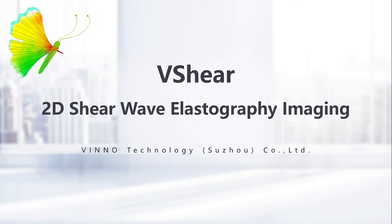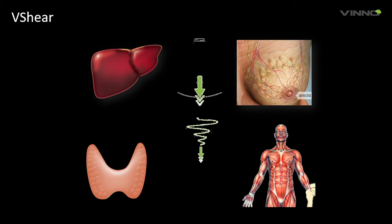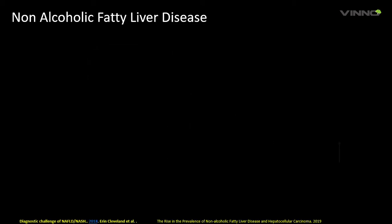VShear is a 2D shear wave elastography imaging that non-invasively assesses the stiffness or elasticity of tissue to detect, diagnose, and grade for clinical management. 2D shear wave elastography is one of the non-invasive imaging methods to detect and stage elasticity that has evolved over the past decades. There are multiple clinical applications for VShear — like breast, liver, thyroid, and musculoskeletal — and it's expanding.